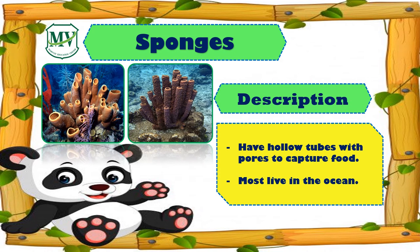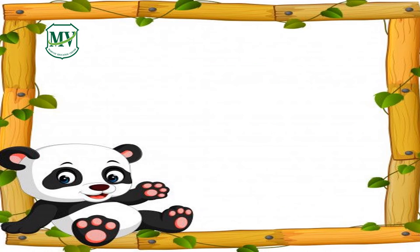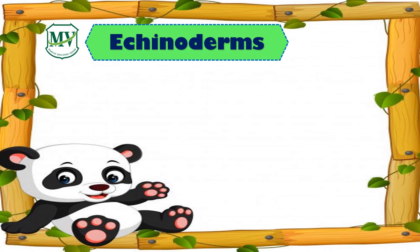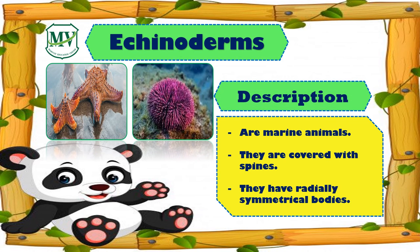Next are the sponges. They have hollow tubes with pores to capture food. And most of them live in the ocean. Next are the echinoderms. Echinoderms are marine animals. They are covered with spines and have radially symmetrical bodies, like starfish and sea urchin.